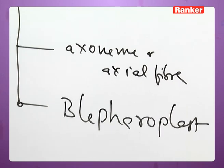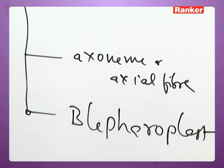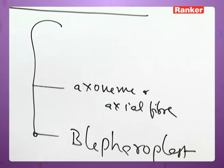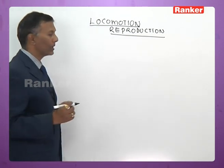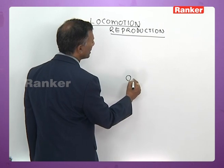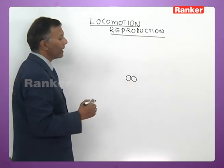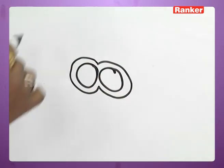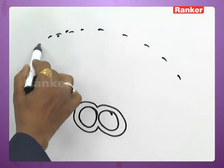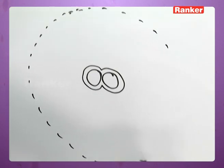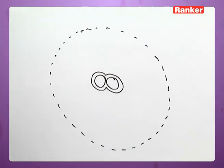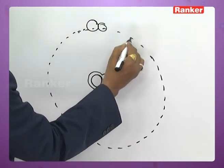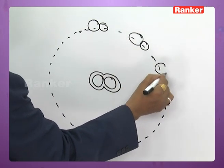When you take the axoneme cross section, it reveals a 9+2 arrangement. At the centre of the axoneme there are 2 microtubules called central microtubules. The central microtubules are covered by an inner protoplasmic sheath, and at the periphery there are 9 microtubules where each microtubule is paired.